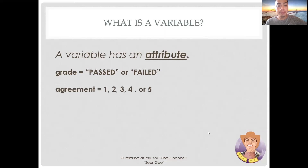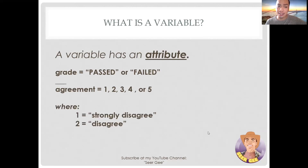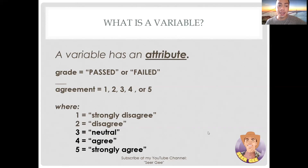Or, the variable agreement might be defined as having five attributes — 1, 2, 3, 4, 5 — where 1 is strongly disagree, 2 is disagree, 3 is neutral, 4 is agree, and 5 is strongly agree.